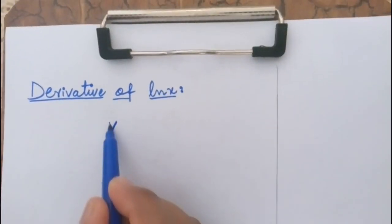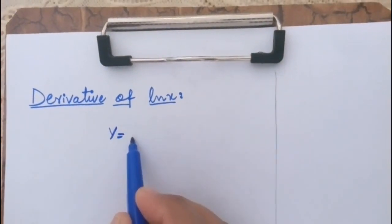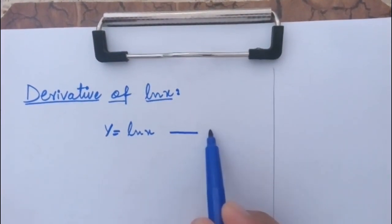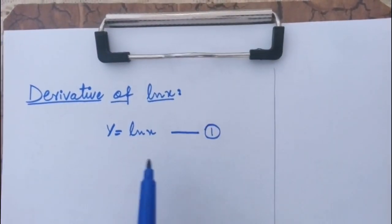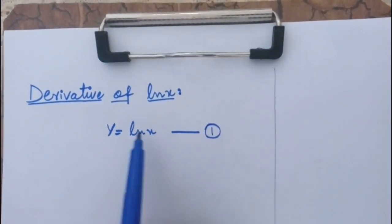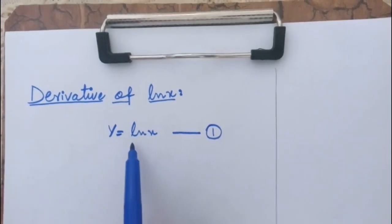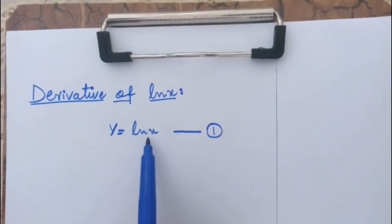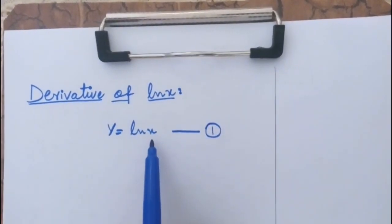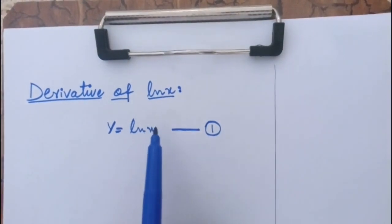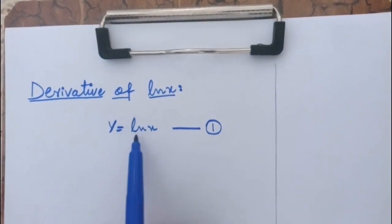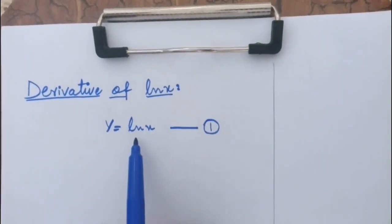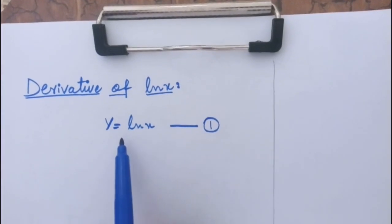First, let y is equal to ln x, and it is equation 1. Now ln x is a function in which x is the domain and domain is an independent variable. In this case ln x, or y, is a function of range and range is a dependent variable.